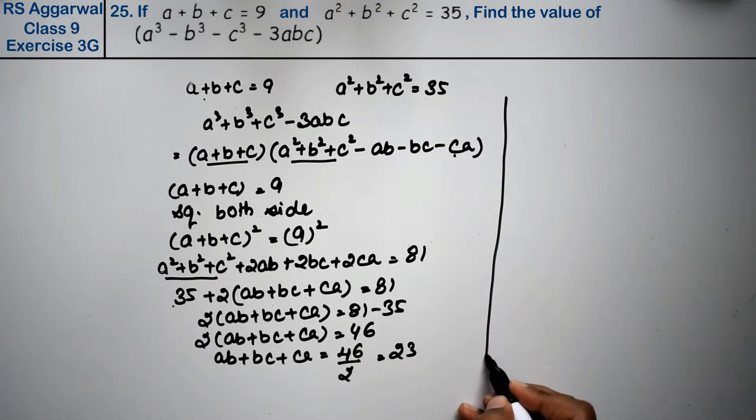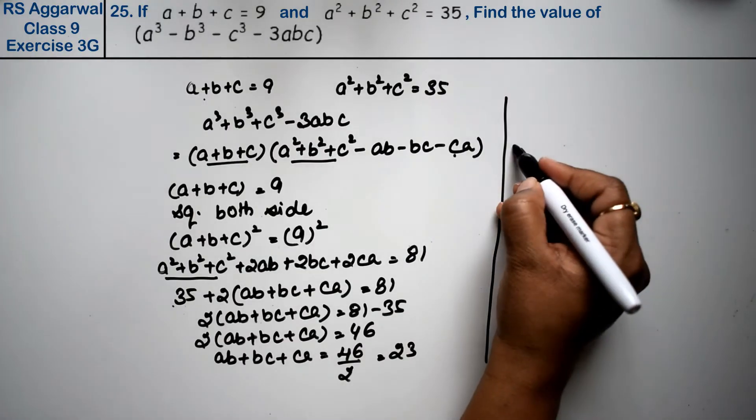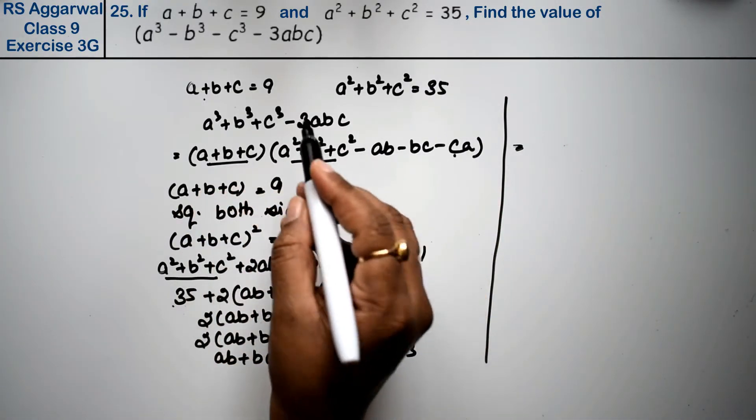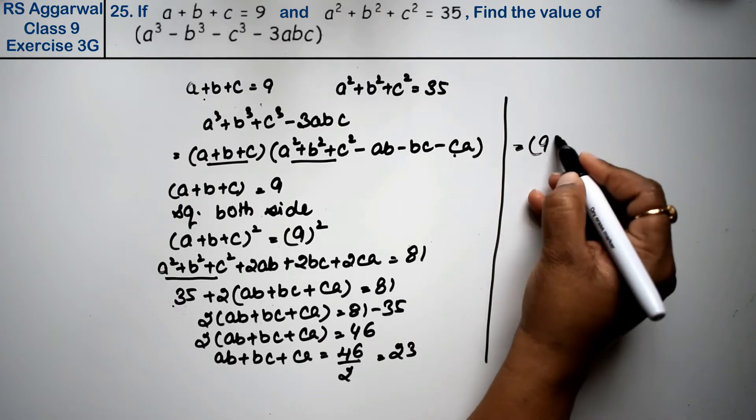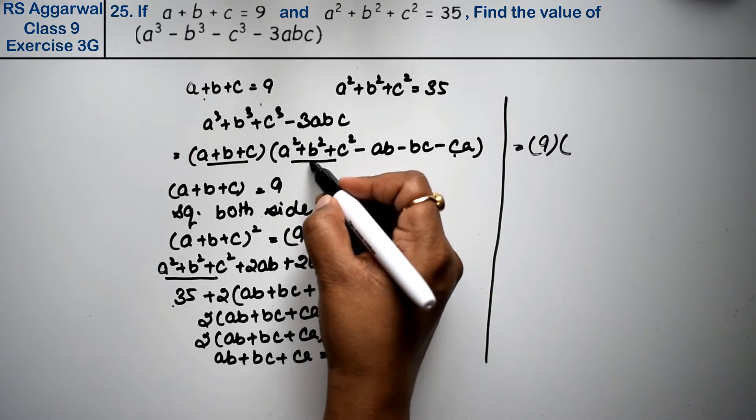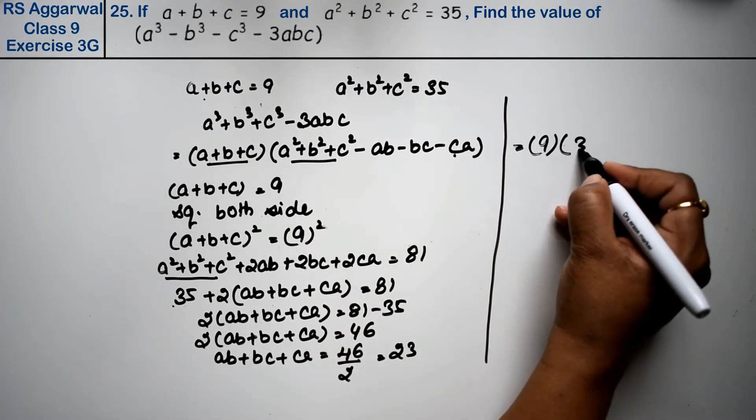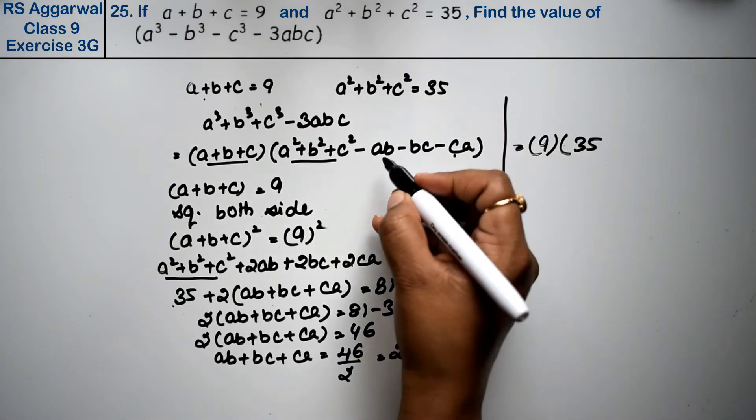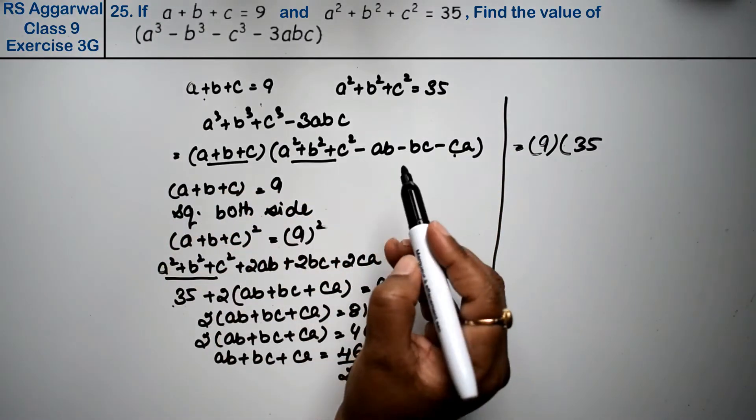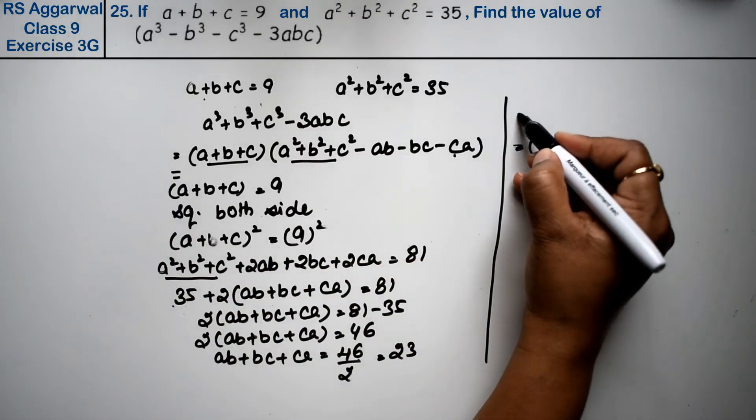Now, friends, you can see in this formula, a plus b plus c value is 9, in the bracket a squared plus b squared plus c squared value is 35. Now minus, if you see this value, here I am writing.